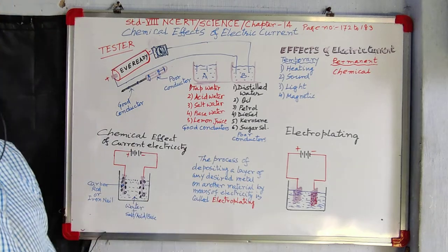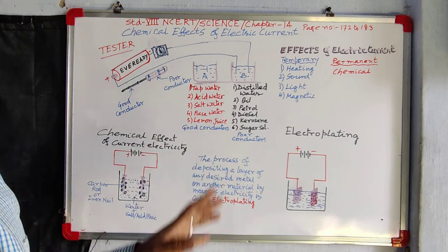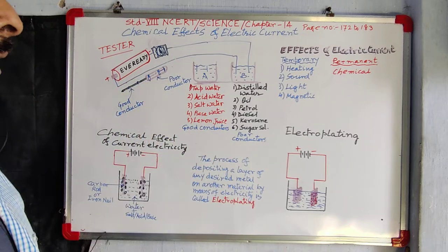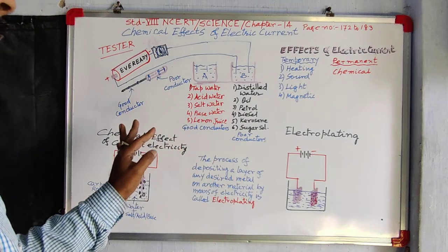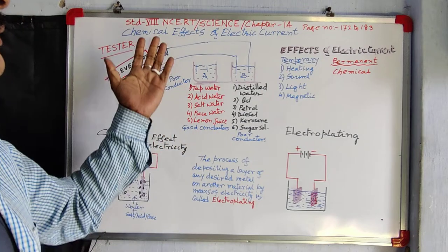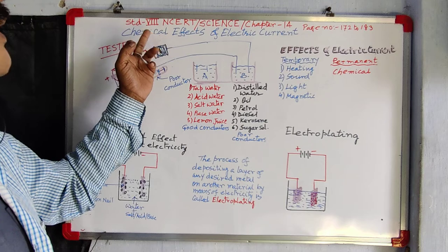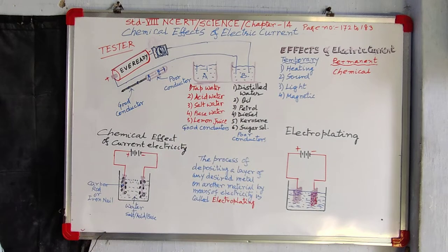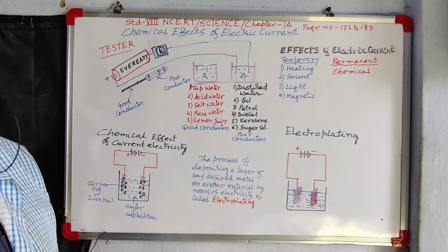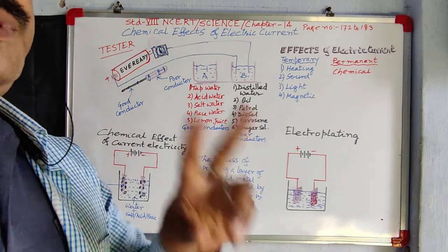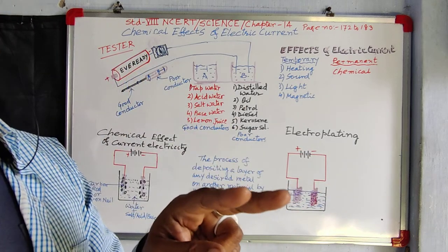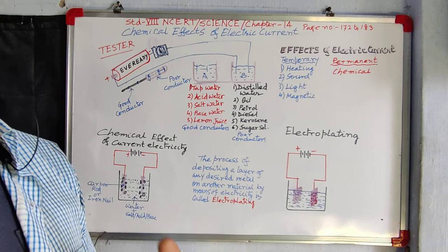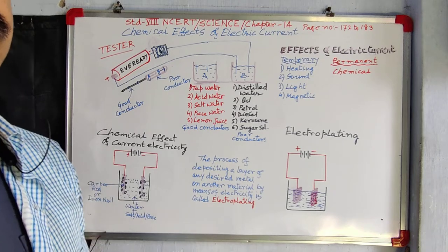Whatever may be the tester, our purpose is to find out whether some substance — solid or liquid — is a good conductor or bad conductor. So we have concluded who are good conductors and who are bad conductors. Now, today's chapter is actually different — we are interested to see the chemical effect of electric current. Effect means some changes. For example, if we pass electricity inside a bulb, the bulb glows — a change is seen in the bulb.